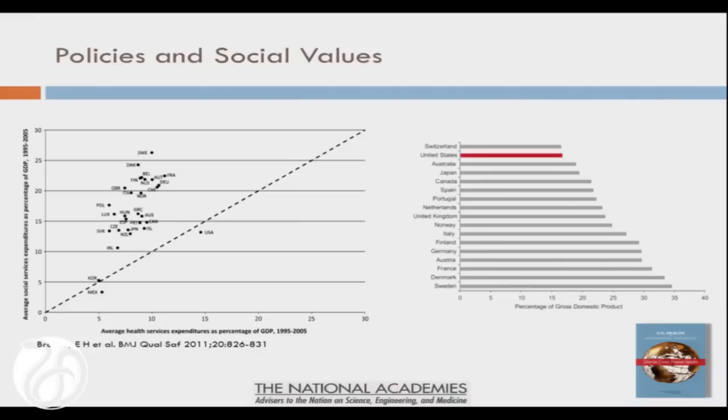We looked upstream to think about the policies and social values that shape these conditions — perhaps the one explanation that could account for such a diverse set of health problems is our approach to making decisions in this country. We examined things like the relatively small amount of resources we devote to social spending. We were intrigued by the study by Elizabeth Bradley and her colleagues at Yale, which plotted the ratio between social spending and health care spending. You can see the US is the outlier; the rest of the high-income countries spend proportionally much more on social programs than on health care — and those are the countries with better health outcomes.